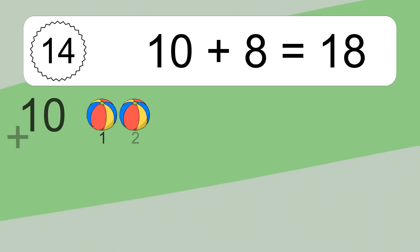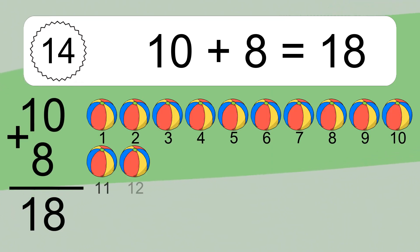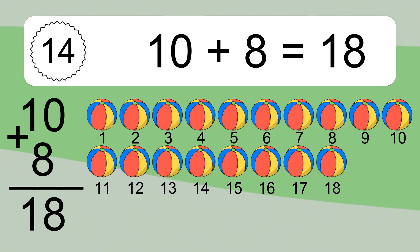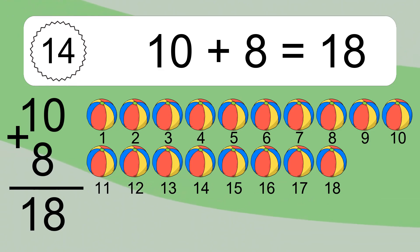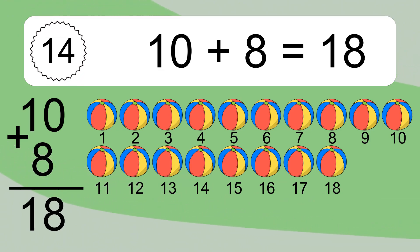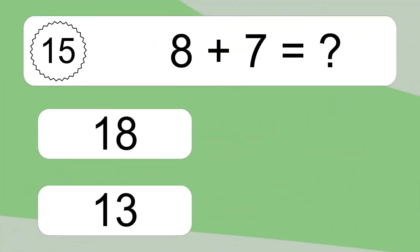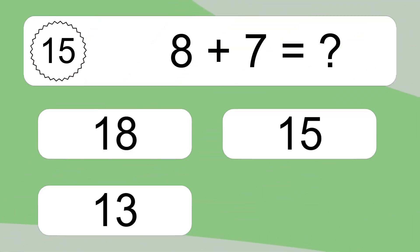10 plus 8 equals what? 10 plus 8 equals 18. Let's count it: 1, 2, 3, 4, 5, 6, 7, 8, 9, 10, 11, 12, 13, 14, 15, 16, 17, 18.